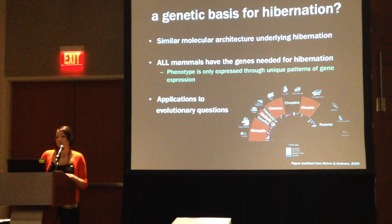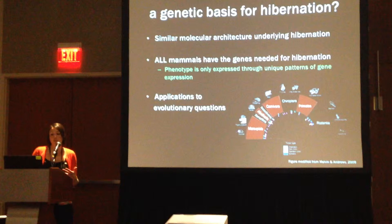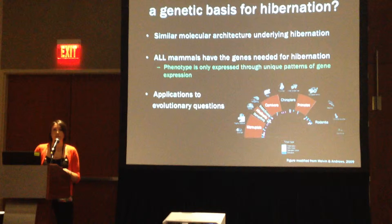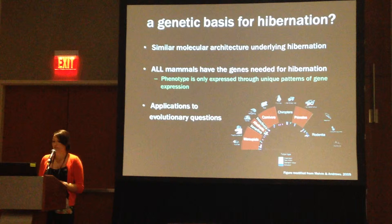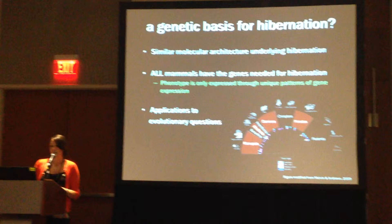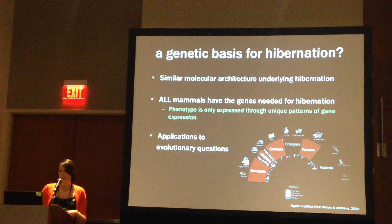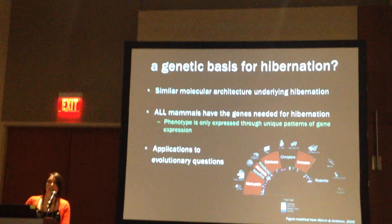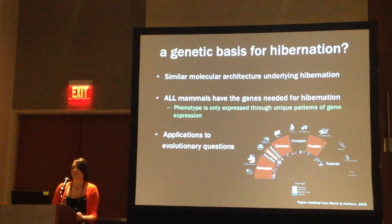Given this patchy distribution, some authorities have suggested a similar molecular architecture underlying hibernation — that all mammals have the genes needed for hibernation already in their genome, but that the hibernation phenotype is only expressed through unique patterns of gene expression. Using this information, we can begin to answer some intriguing evolutionary questions. For example, using comparative physiology, we can look to see if similar patterns of gene expression or genetic pathways are being used among very distantly related hibernating species, which can reveal insight into whether this trait is a retained ancestral trait or one that shows evolutionary convergence.